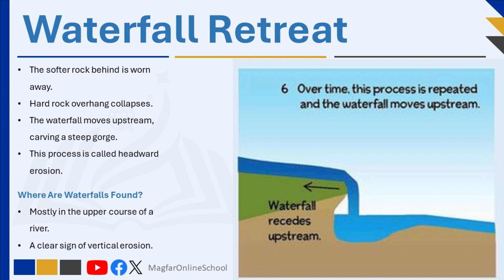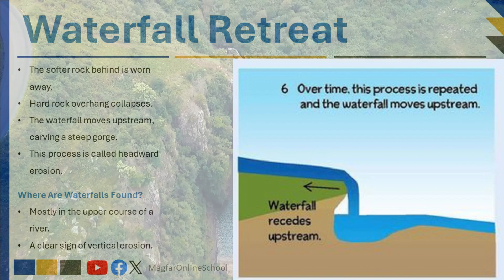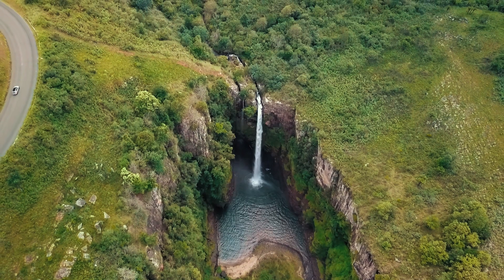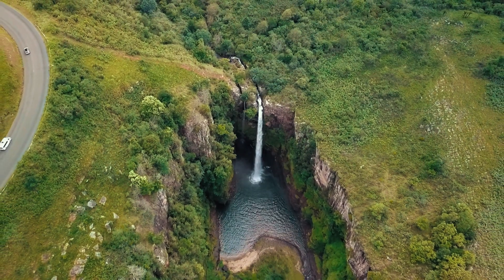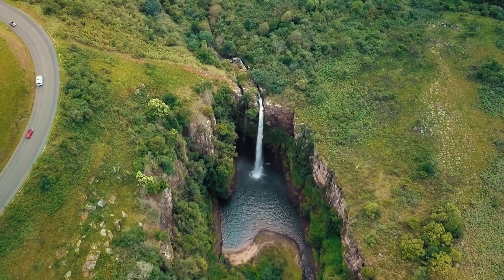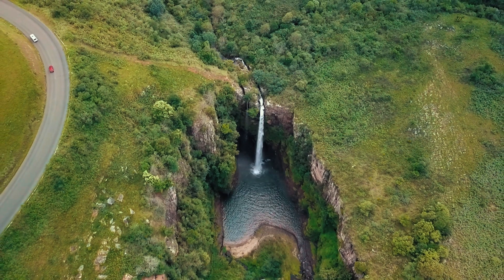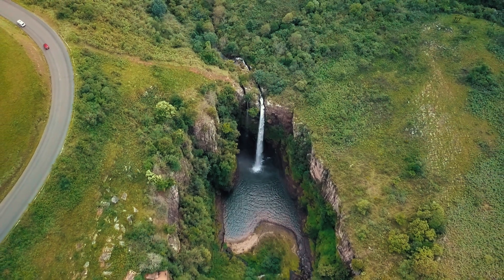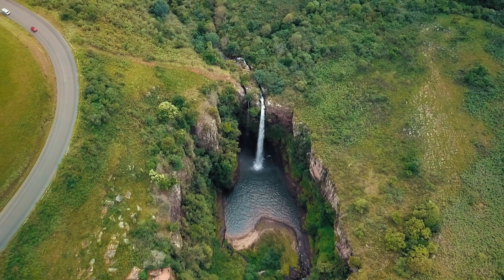Over time, headward erosion causes the waterfall to retreat backward, cutting out a steep-sided gorge. Waterfalls are usually found in the upper course of a river and are a clear sign of rapid vertical erosion. They mark a sudden change in the river's slope and show how powerful a river can be in shaping the land.